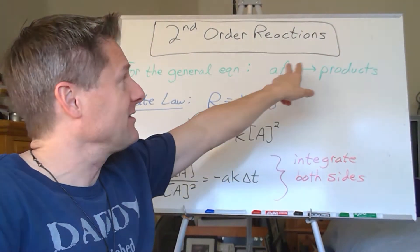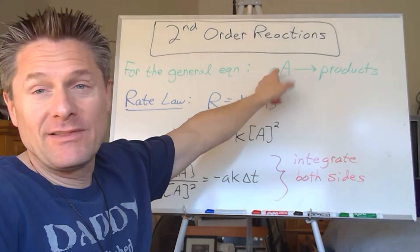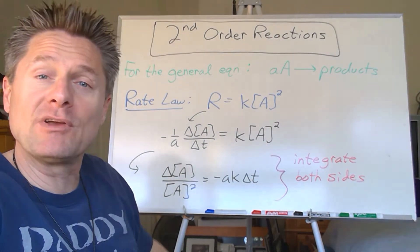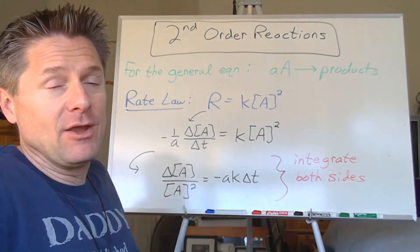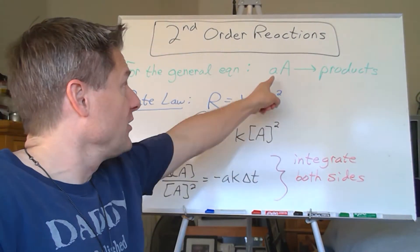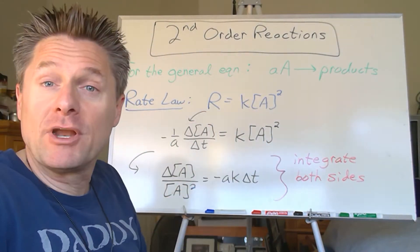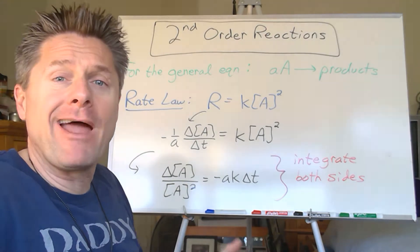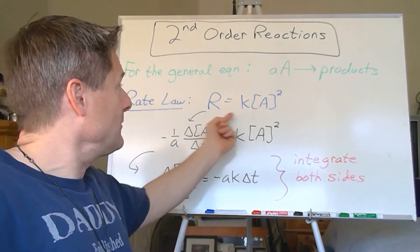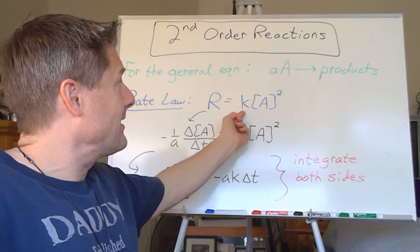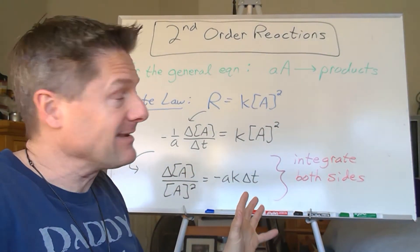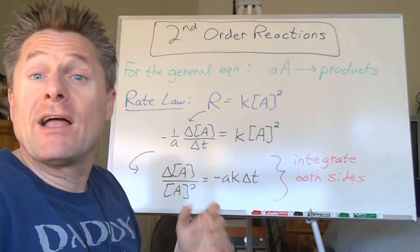So just A going to products. A lot of times you'll see these derivations in textbooks and videos where they just treat the stoichiometric coefficient as one, so you don't see this little A factor floating around. Rate law again: the rate of that reaction will be the rate constant times the reactant concentration. In this case we only have one reactant, but raised to the power of two.